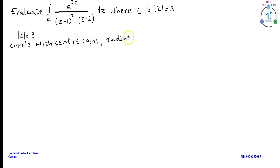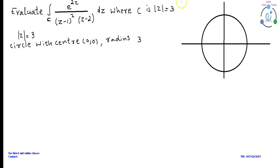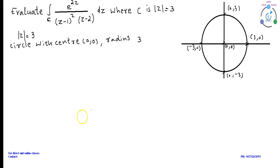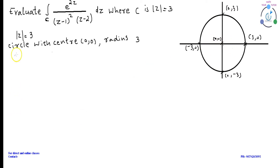Here the contour is given by mod Z equal to 3, which represents the circle with center (0, 0) and radius 3. Mod Z equal to 3 can be graphically represented as shown in the figure.